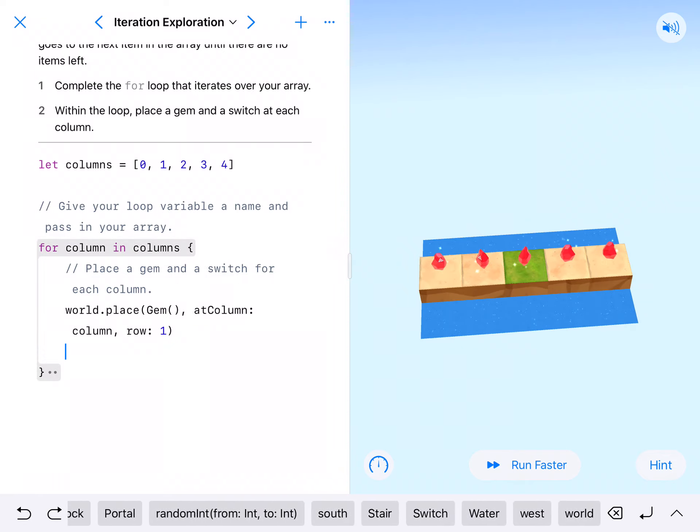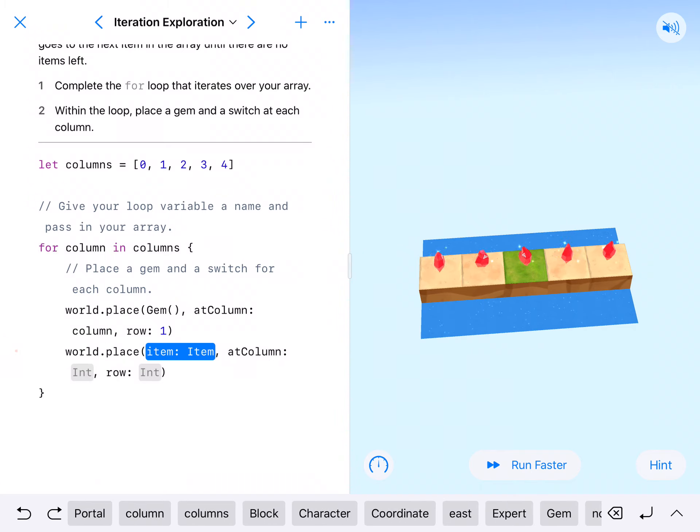From here, we're going to world.place. We've got lots of new things - we've got this place item. We need to place a switch, so capital Switch with parentheses behind it.